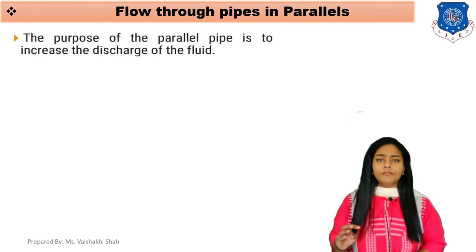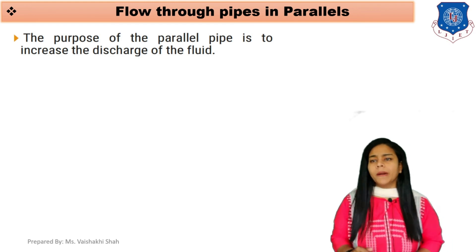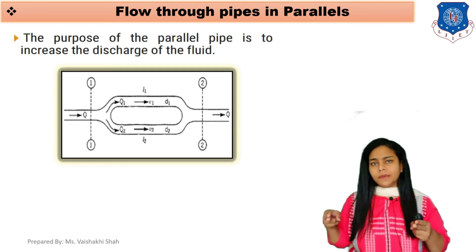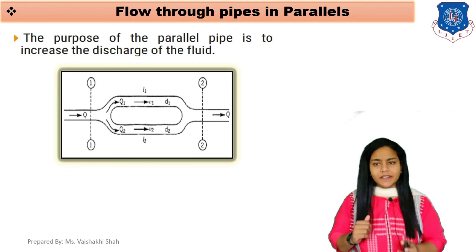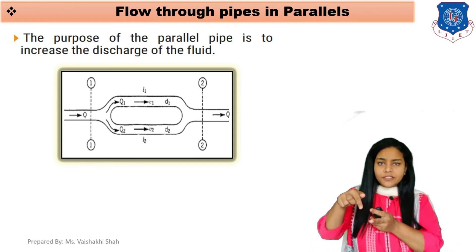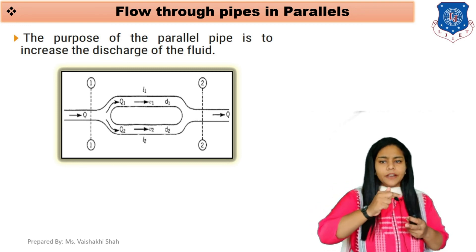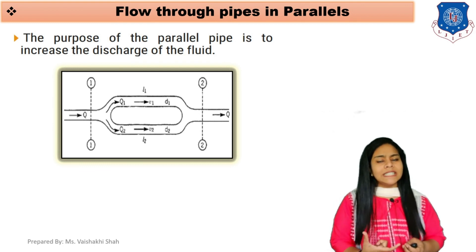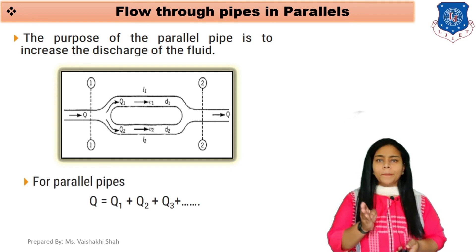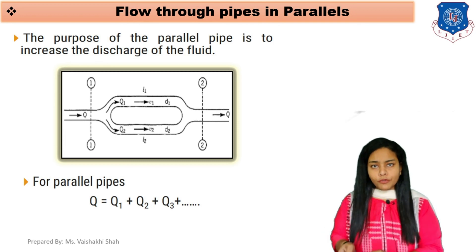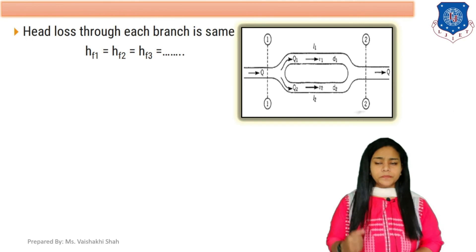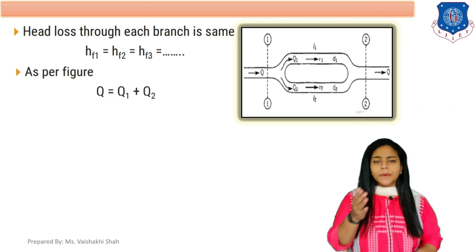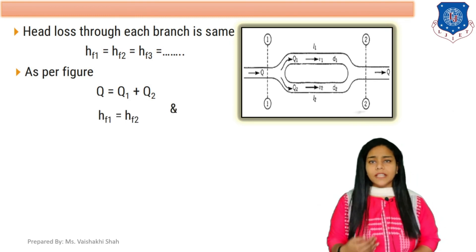Now the next topic is flow through pipes in parallel. The purpose of parallel pipes is to increase the discharge of the fluid. As you can see in this diagram, two different pipes are connected in parallel. The main discharge Q is divided into two pipes Q1 and Q2. Length of pipe one is L1, length of pipe two is L2, diameter of pipe one is D1, and diameter of pipe two is D2. For parallel pipes, total discharge Q = Q1 + Q2.